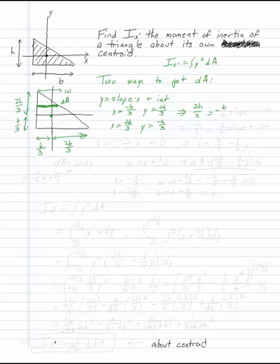You could plug those into your equation for the line, and you get minus b over 3 times the slope plus the intercept. And in the other case, you have minus h over 3 equals 2 thirds of the slope plus the intercept.